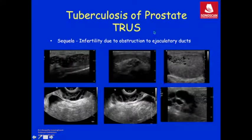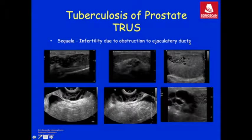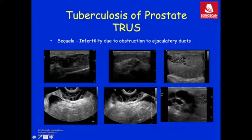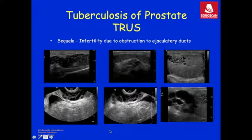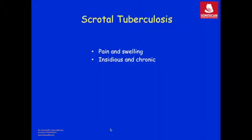Tuberculosis of the prostate can result in infertility due to obstruction to the ejaculatory ducts. On scrotal scan this is seen as dilated tubules in the epididymis or ectasia of the rete testis. The seminal vesicles are dilated and the epididymis may have multiple cysts — features of obstruction to the ejaculatory ducts as a result of fibrosis due to healed tuberculosis.